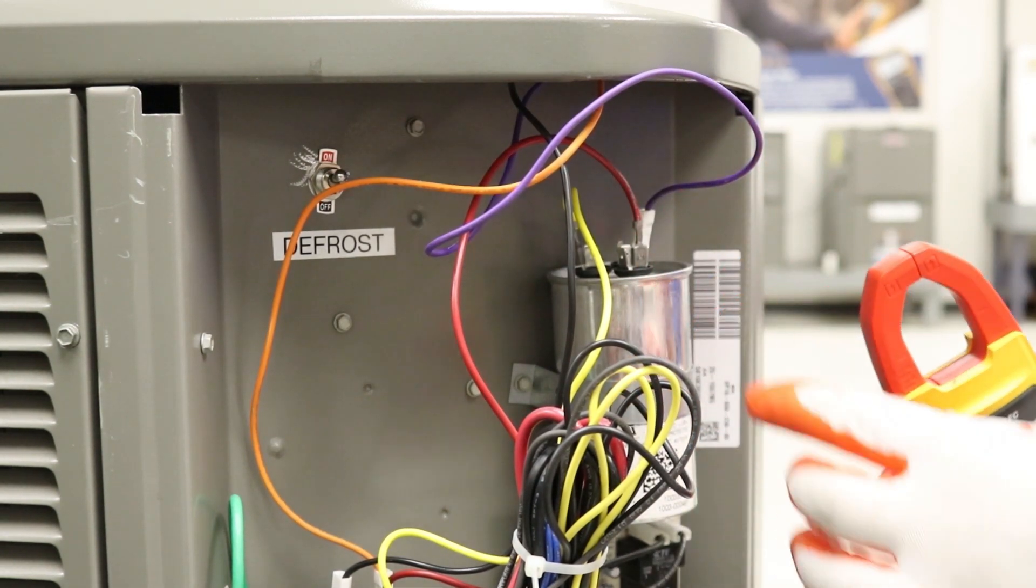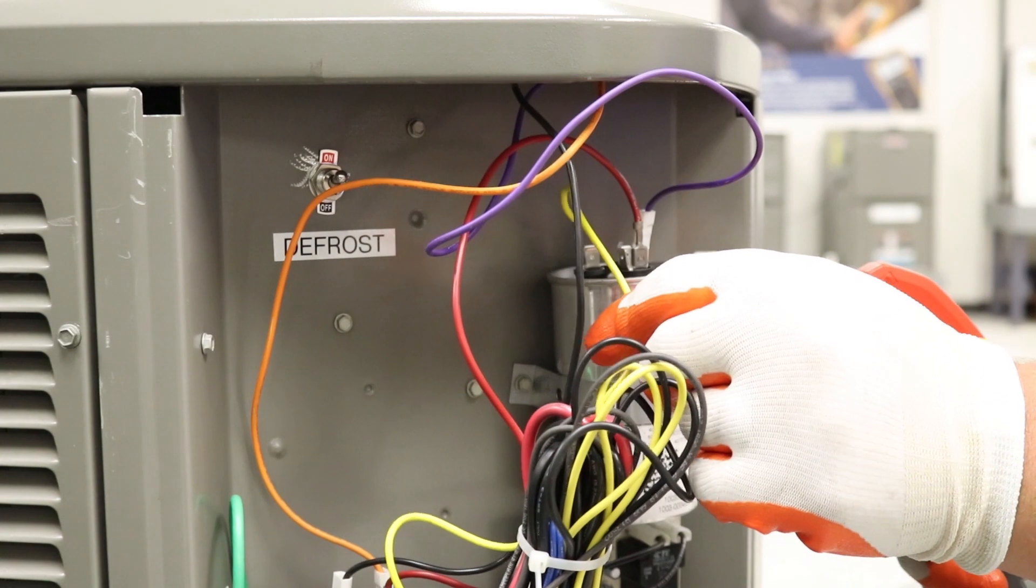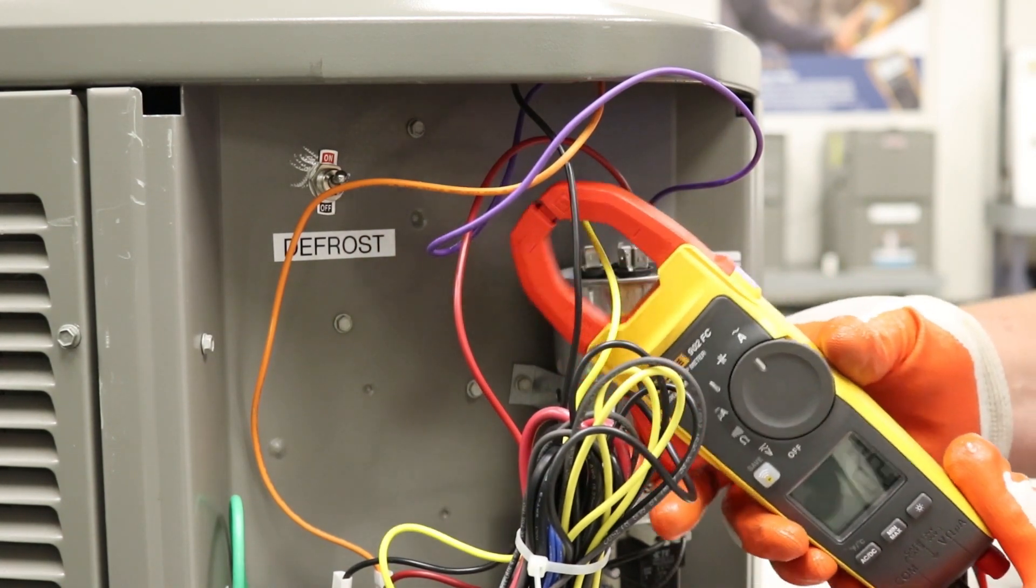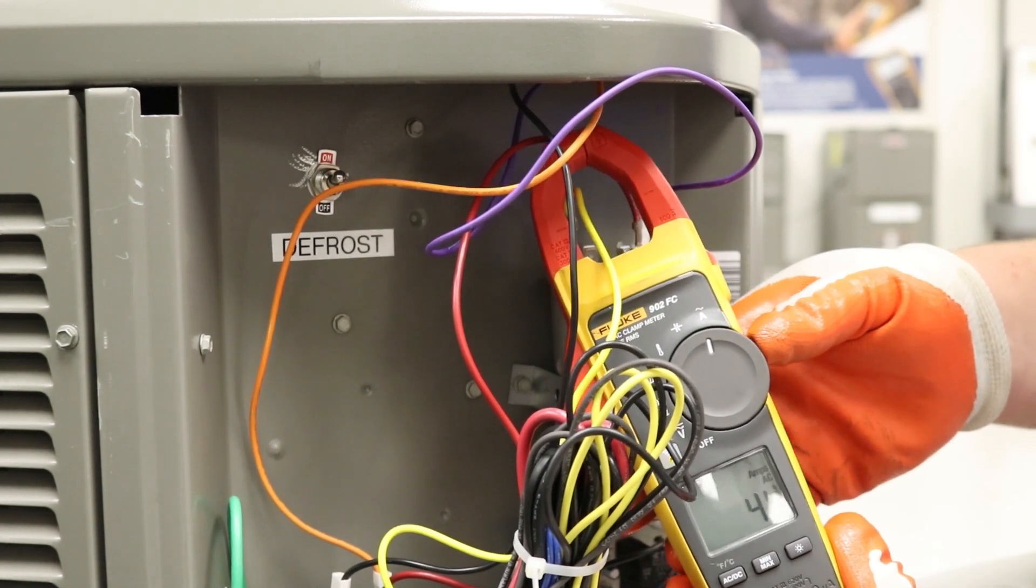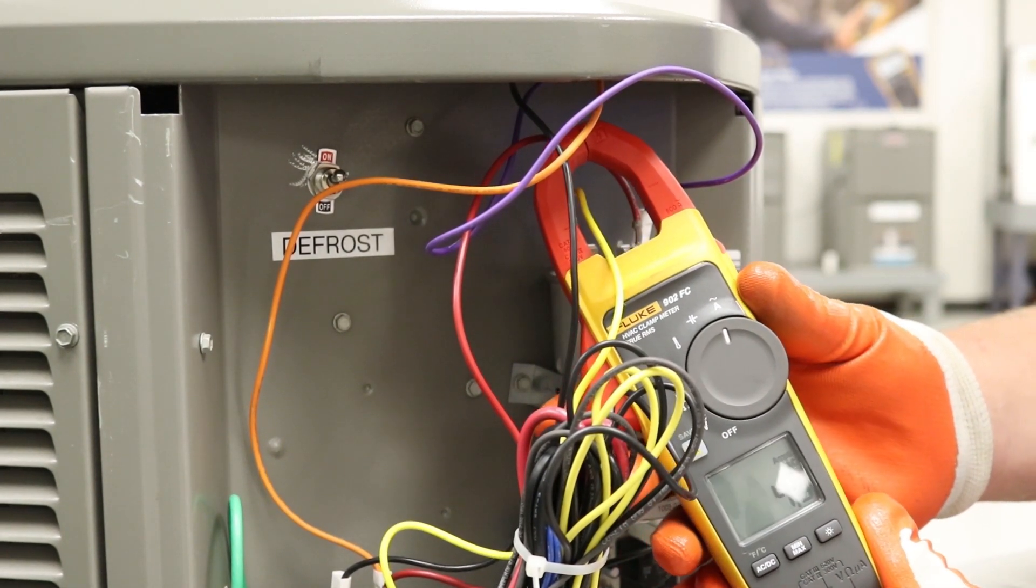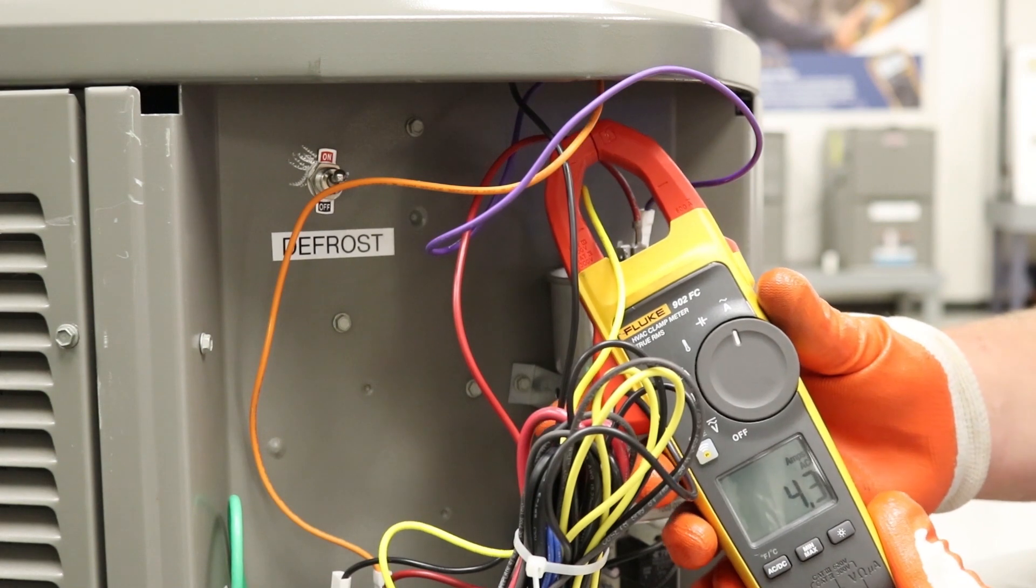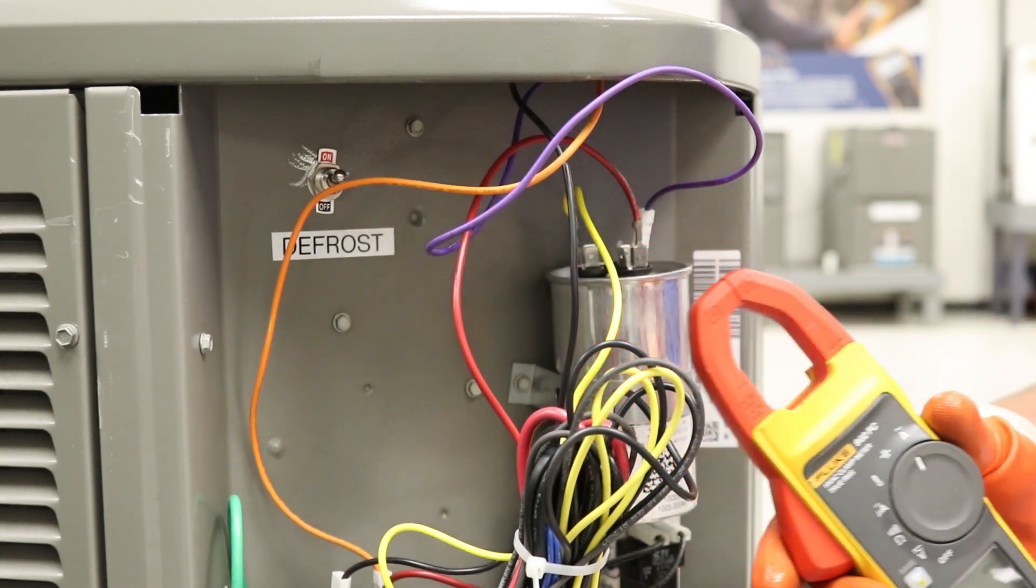We're going to do the same thing across the hermetic terminal or the compressor terminal. We're going to go ahead and hook up our meter to that. And as you can see, it says that our reading is 4.4 amps. So 1.0 and 4.4 amps. You're going to want to write both of those numbers down.